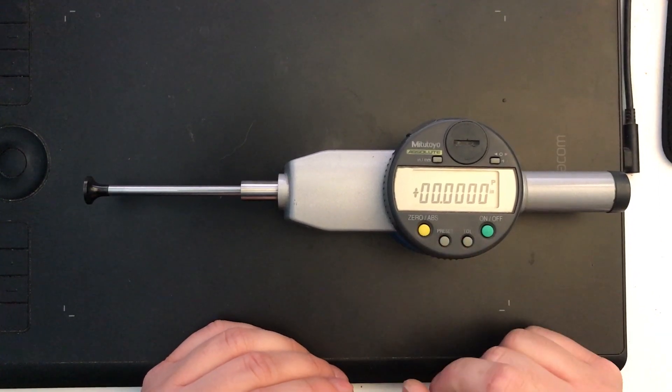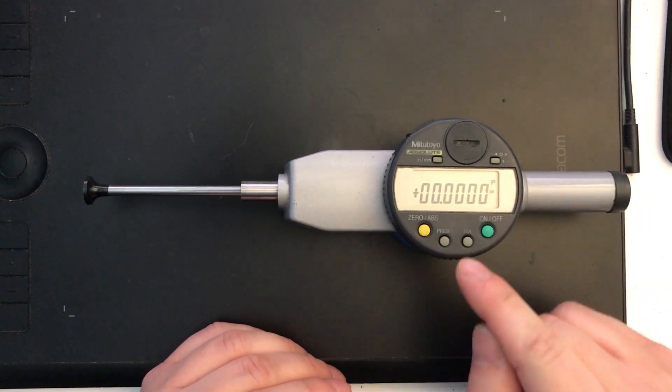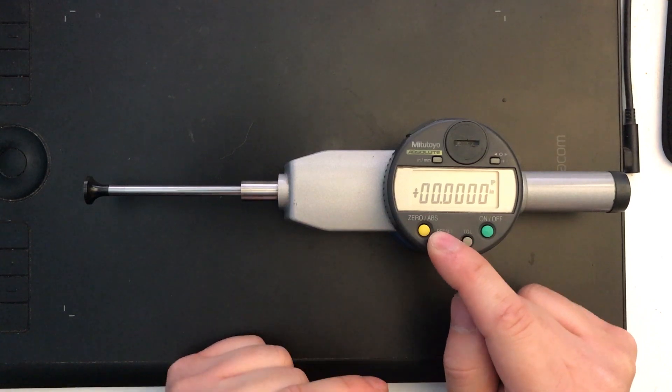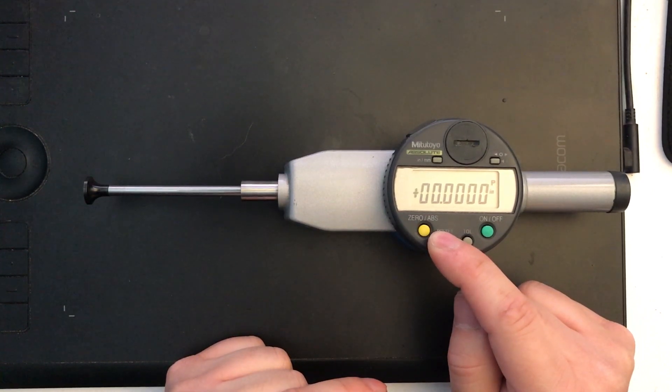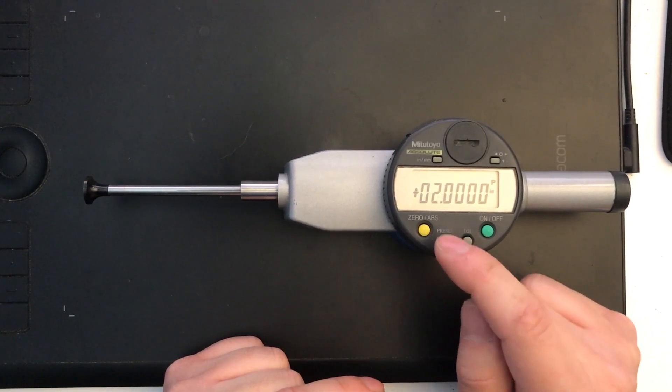You do that by hitting the preset button once. You'll notice that the preset, the P is flashing there. And much like the tolerance level, you edit it the same way. You press and you hold. That flashes. We'll go ahead and we'll change it to three inches. No, four inches. There we go.